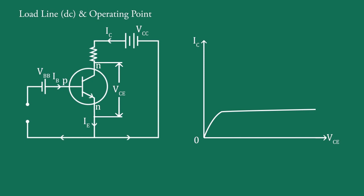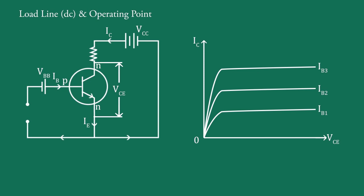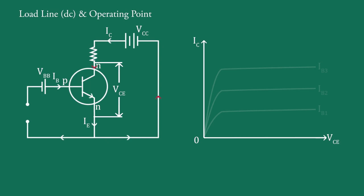The collector current IC is measured by varying the collector voltage VCE for a constant value of base current IB. The experiment is repeated for different values of IB and a family of curves is obtained. Now look at this circuit diagram, in which this is the output loop of the circuit.